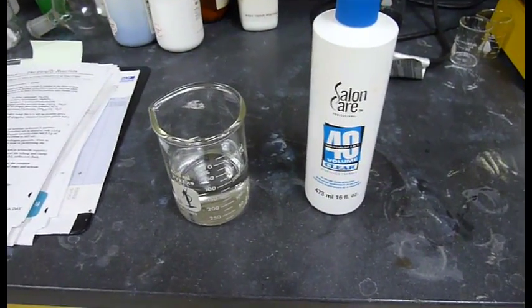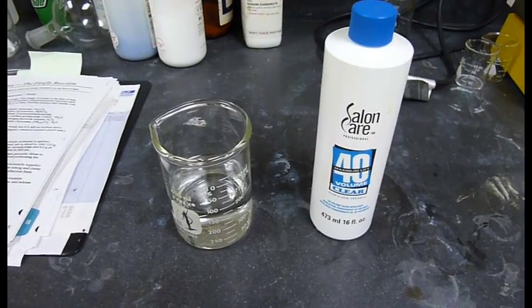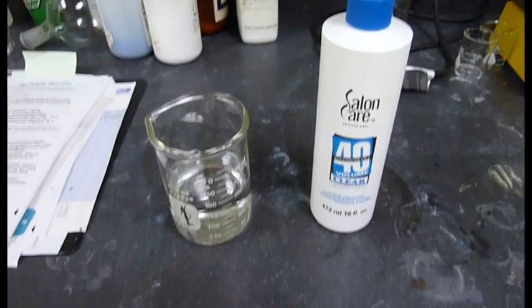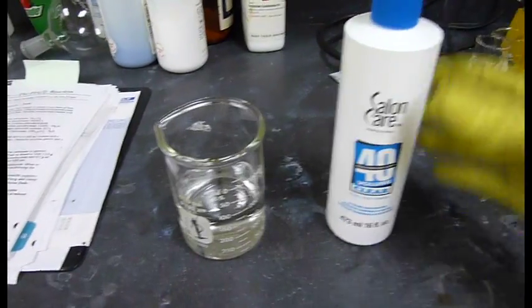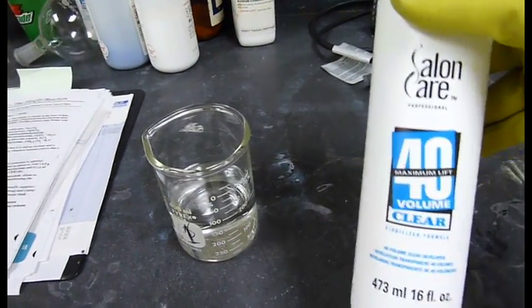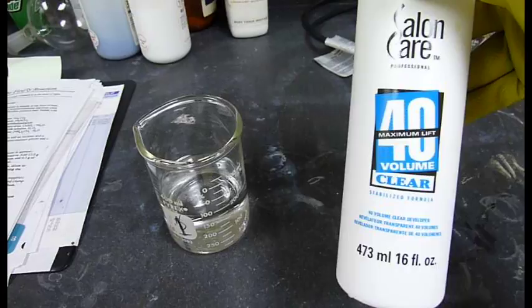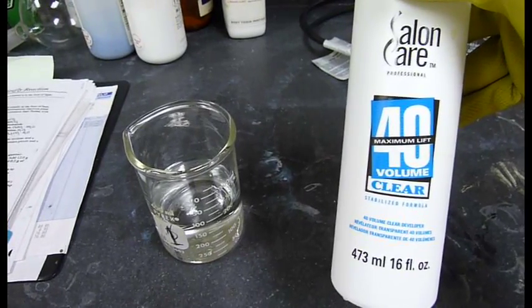The first thing we're going to need is some concentrated hydrogen peroxide. If you don't have access to buy 30% hydrogen peroxide, you can buy this stuff at any beauty supply store. 40 volume clear hydrogen peroxide.